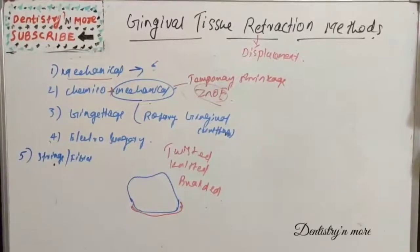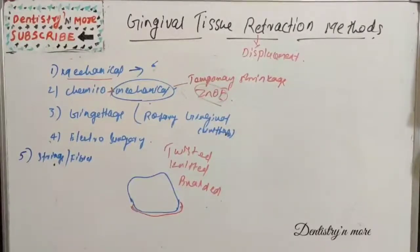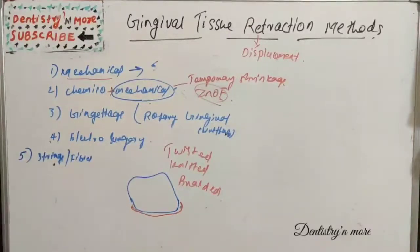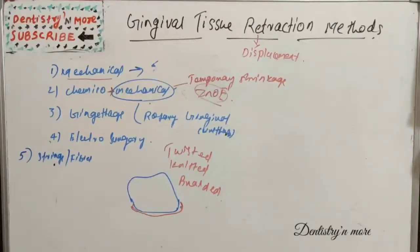Various chemicals are used for gingival displacement: epinephrine at 0.1 to 0.8%, 100% potassium alum sulfate, 5 to 25% aluminum chloride, ferric subsulfate, zinc chloride, and tannic acid. All these chemicals are used to retract the gingiva.